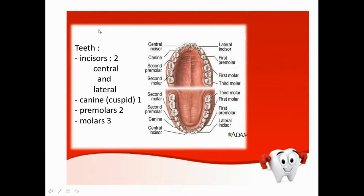Many of us don't know how many teeth we have, what is the form of our teeth, or what the names of the teeth in our mouth are. In this picture you can see the upper jaw and the lower jaw, and you can see every tooth's name individually written.